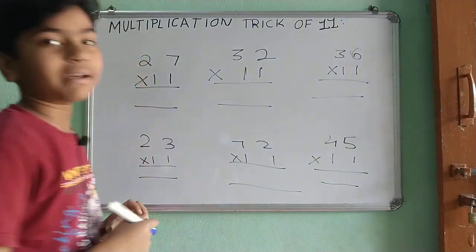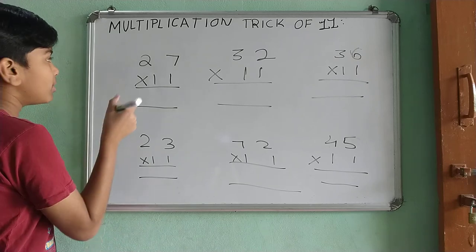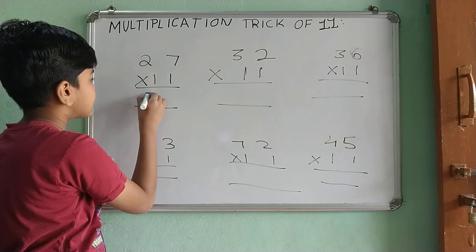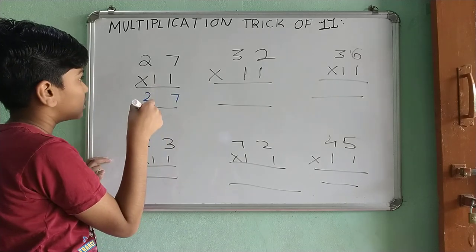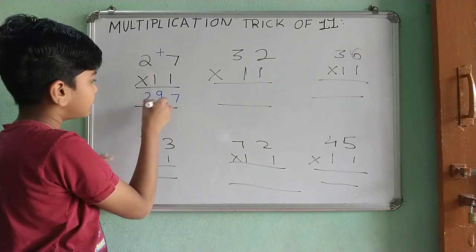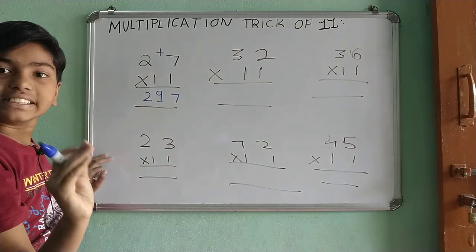27 multiplied by 11. What will be the answer? Write this 27 as it is. 7 plus 2 is 9. Write it in the center.